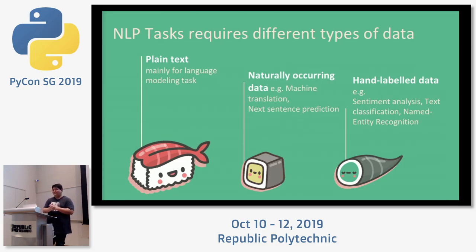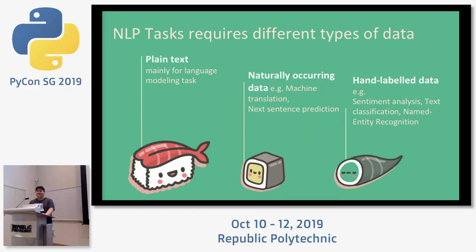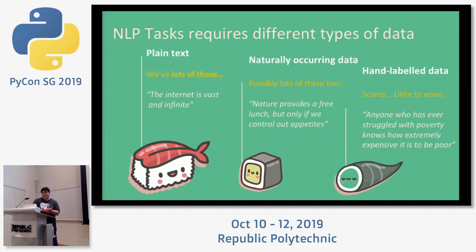Then you have a whole bunch of very specific hand-labeled data for sentiment analysis — people just labeling positive, negative, neutral. And then somebody comes in and says, we need to change this to a five-point scale, then a seven-point scale. This is just senseless labeling and takes a lot of time. So we have lots of plain text, possibly quite a lot of naturally occurring text, but we don't have a lot of hand-labeled data. That is where you need transfer learning.